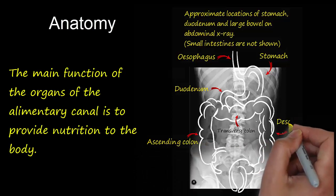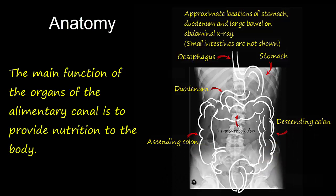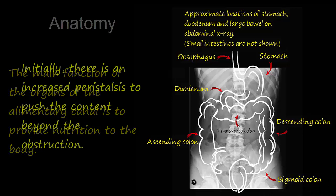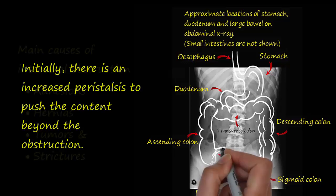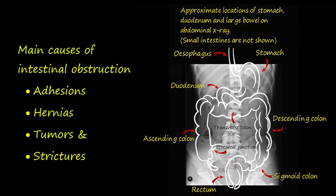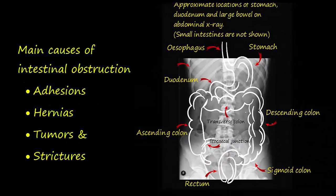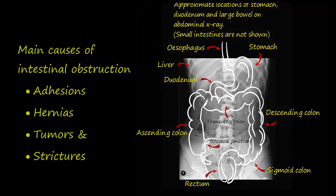In patients with intestinal obstruction, the dilated bowel contains a large amount of fluid, chyme, or gas. There is increased peristalsis to push the content within the bowel beyond the obstruction. Bowel obstruction can also be due to bowel wall abnormality such as tumor or stenosis, and also due to extrinsic causes such as adhesions and hernia.